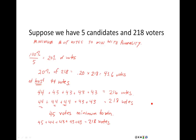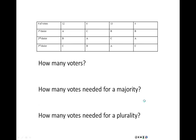The homework questions will give you a preference schedule listing voters' ordered preferences and how many voted for each. The first question will ask how many voters there were. To find the total number of voters, just add up the top row of each column. In this problem, we have 12, 6, 13, and 4 voters — 12 plus 6 is 18, plus 13 is 31, plus 4 is 35 voters total.